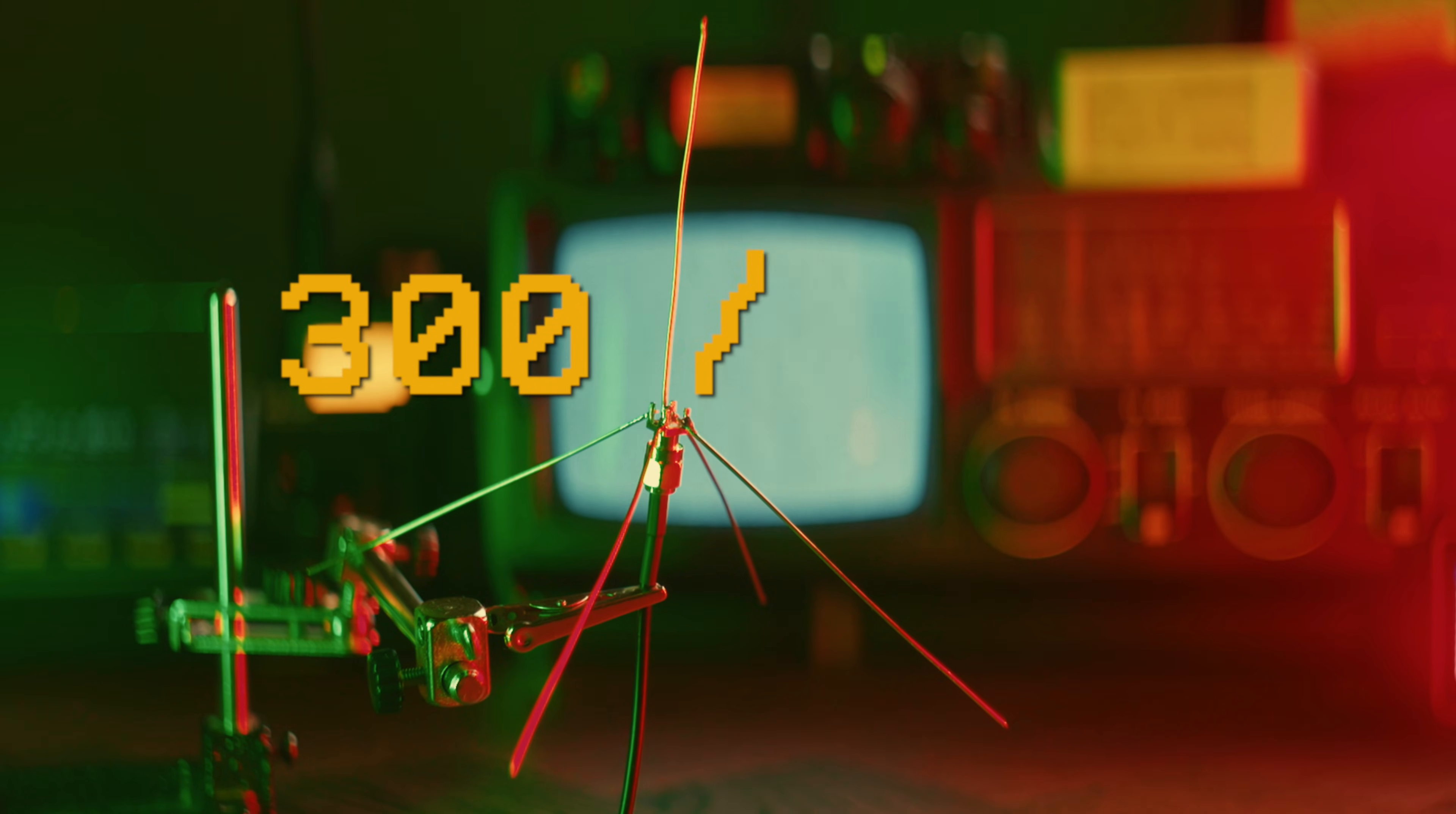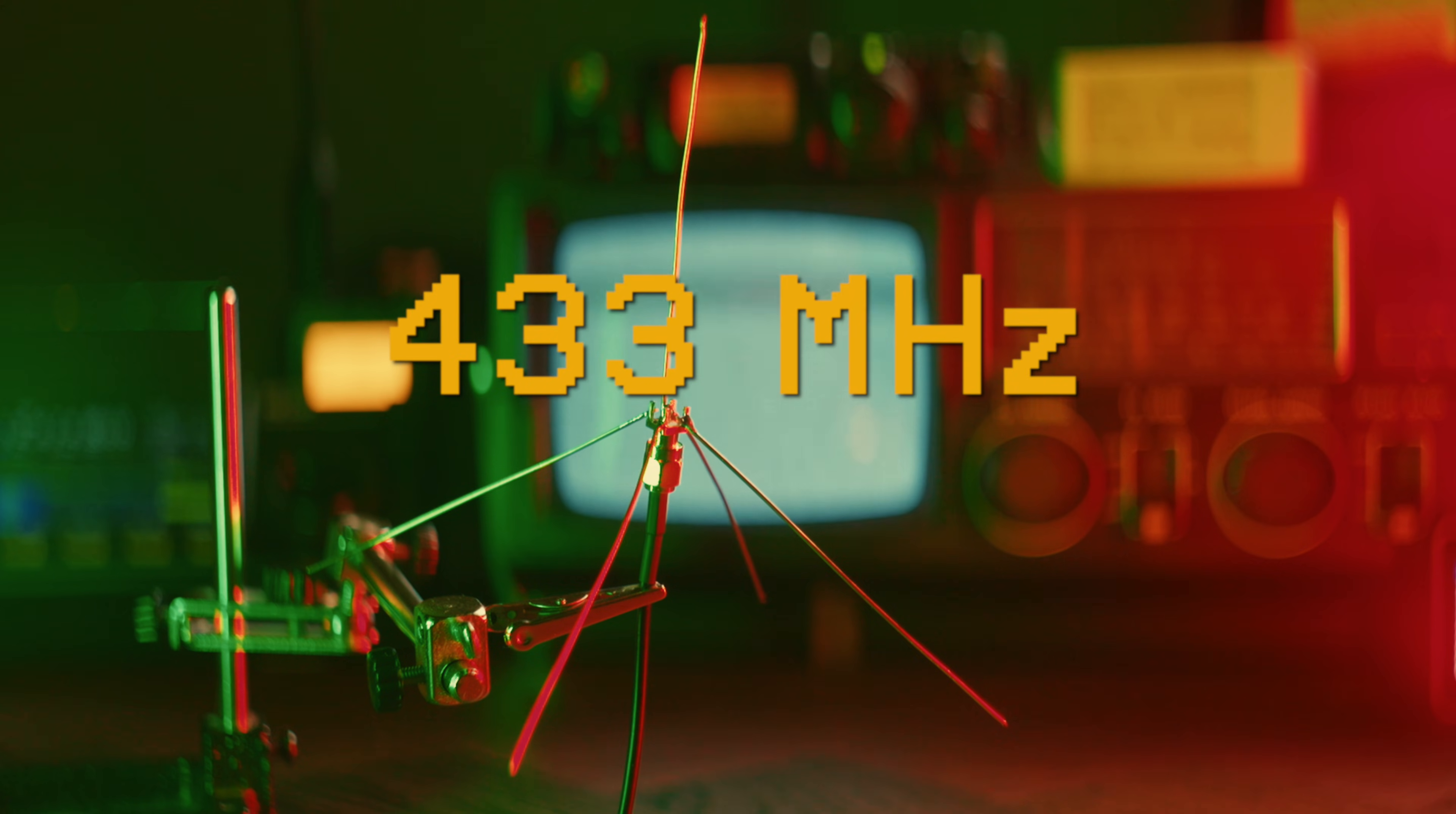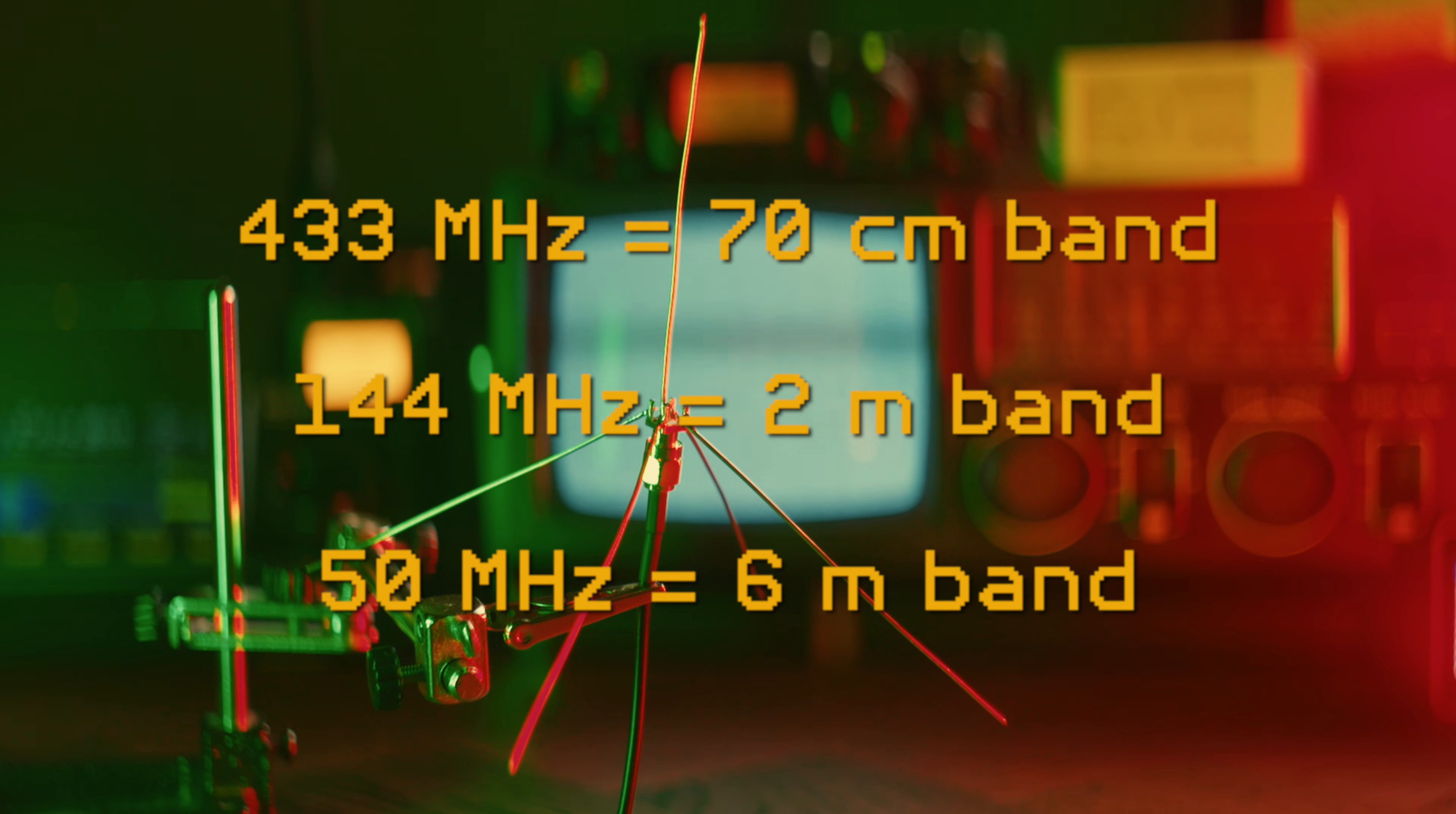This is why we say that 433 megahertz is in the 70 centimeters band. As we go down in frequency, the wavelength increases. For instance, 144 megahertz is the two meter band, and 50 megahertz is the six meter band.